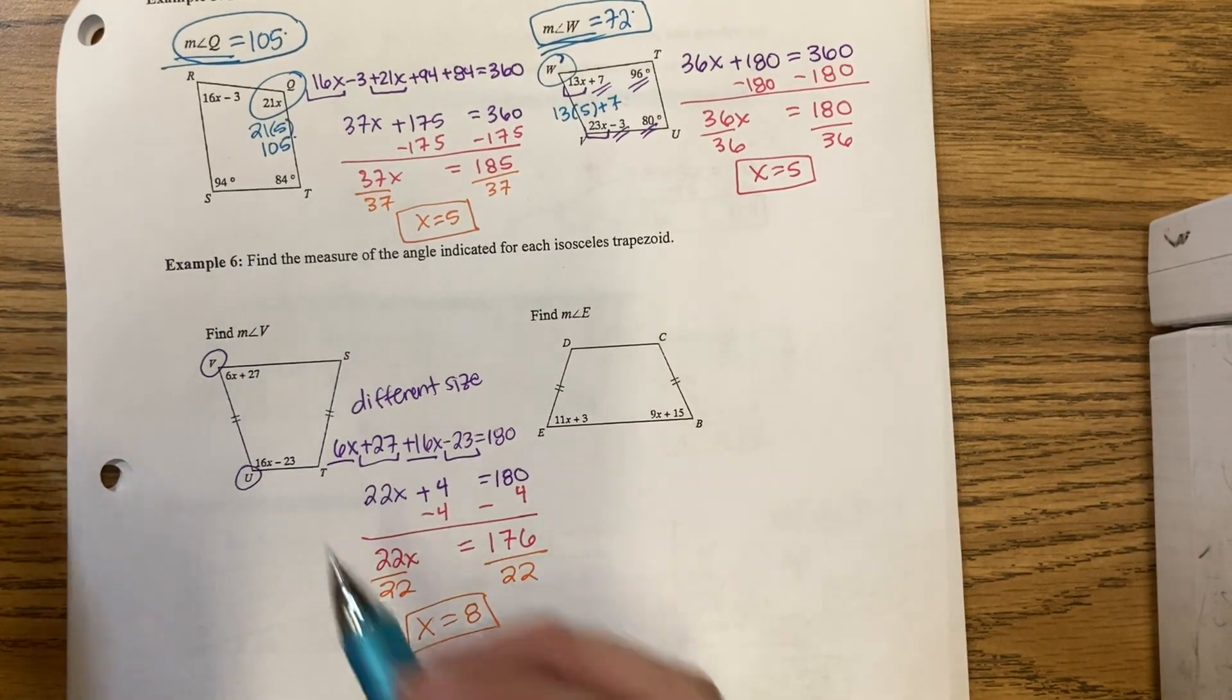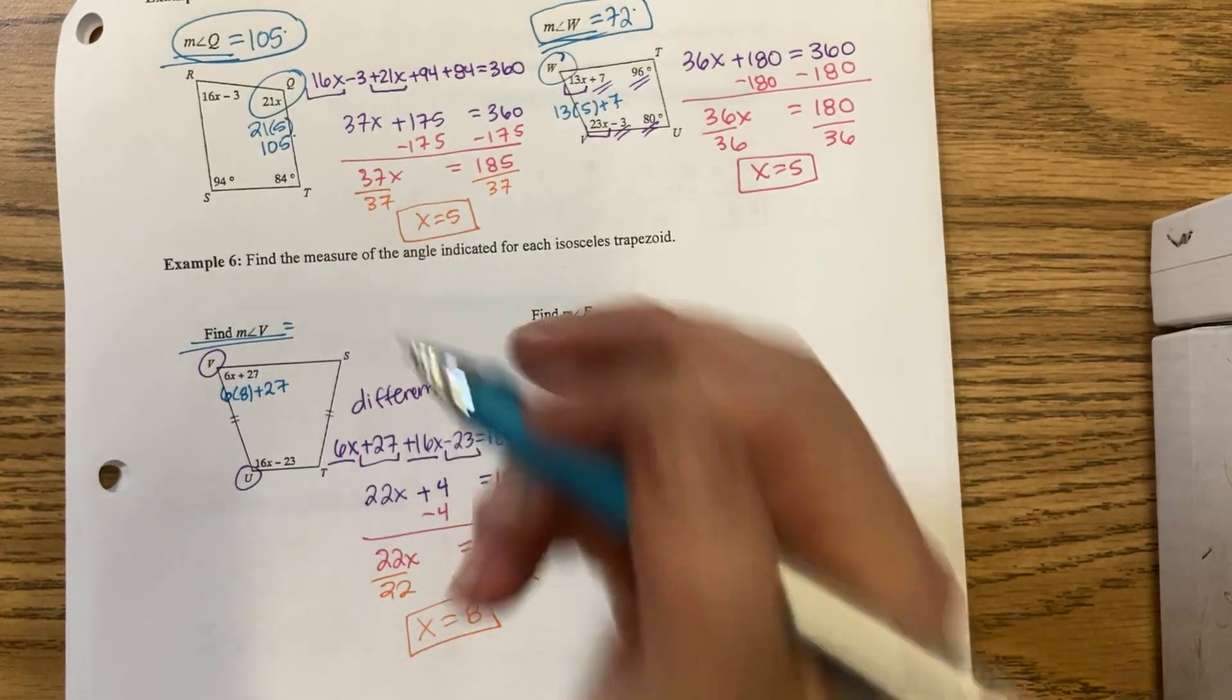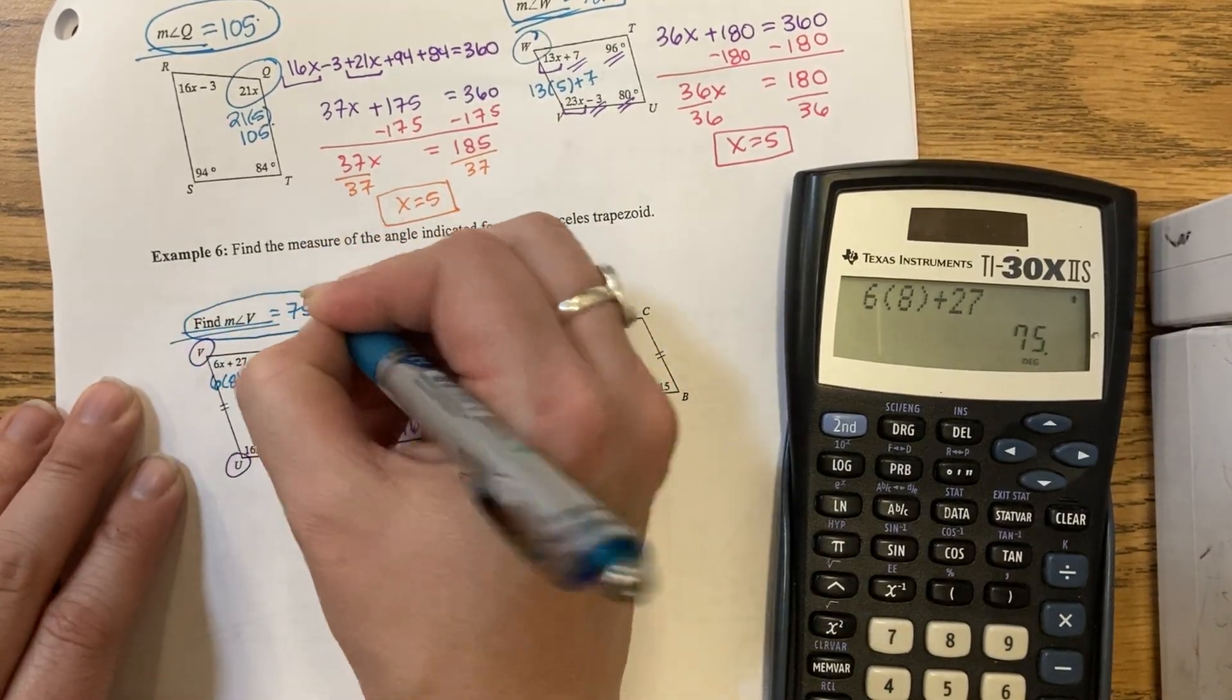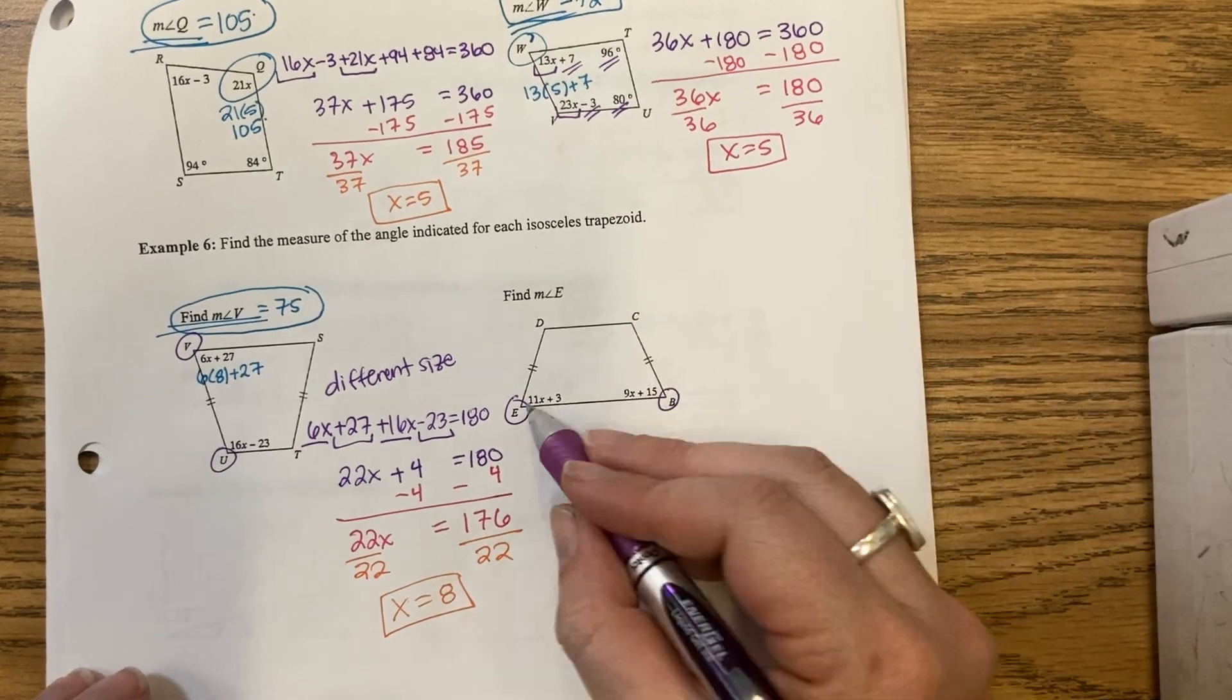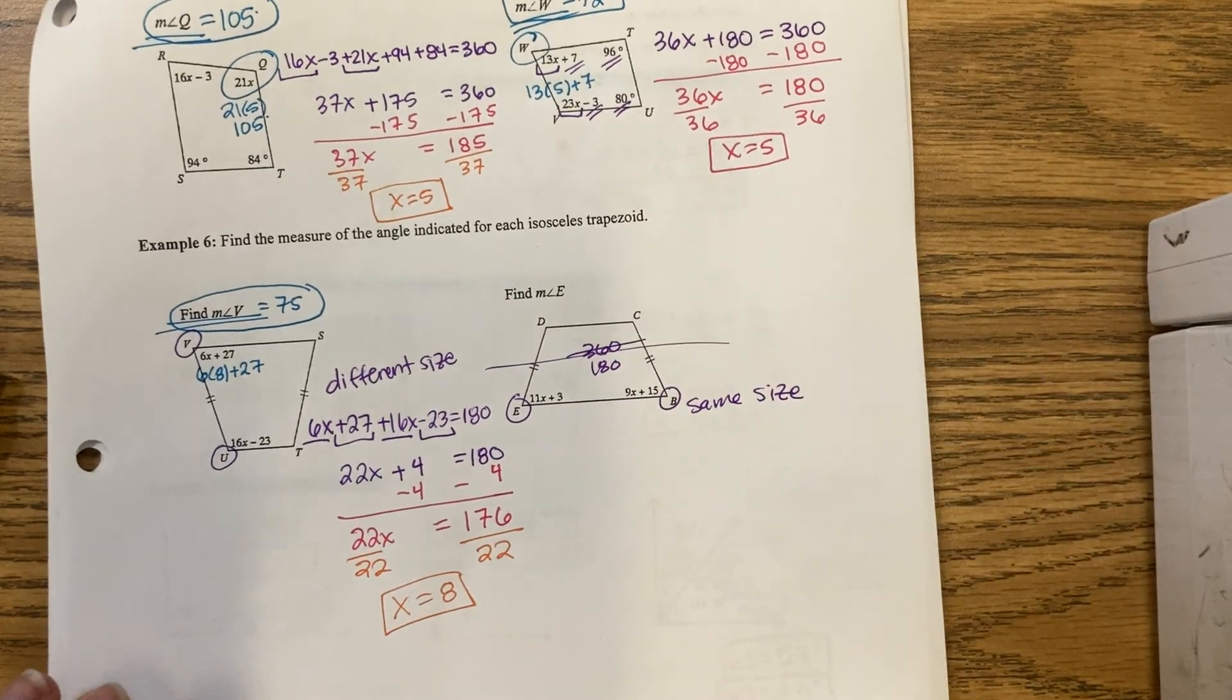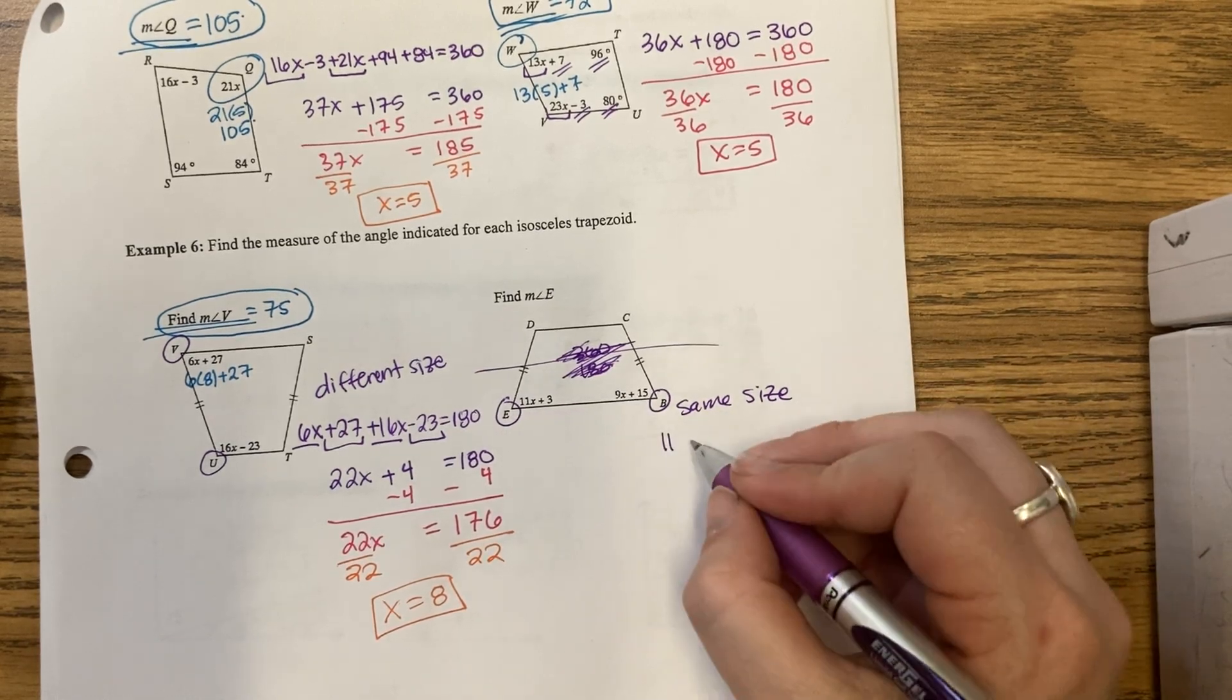What does it want us to find? Find the measure of V. So I would have 6 times 8 plus 27. That's 75. I have matching angles. They're the same size.